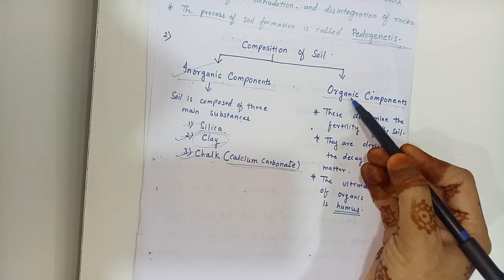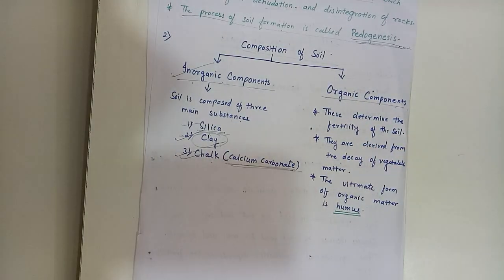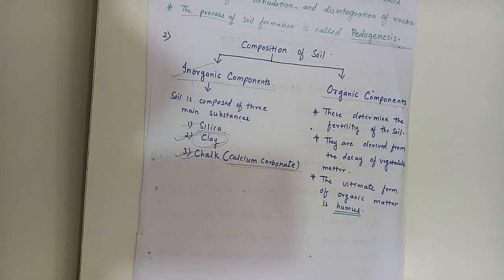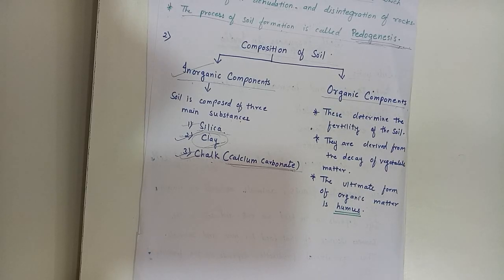Now come to the second term, organic components. These determine the fertility of the soil and are derived from the decay of vegetable matter. The ultimate form of organic matter is humus. It is not a mineral — it is organic matter because it is formed by the decomposition of plant remains, animal waste and dead animals. It helps the soil to retain moisture and imparts fertility to the soil. It also helps plants to draw nutrients from the soil essential for growth. Soil also contains moisture and air which varies from soil to soil.